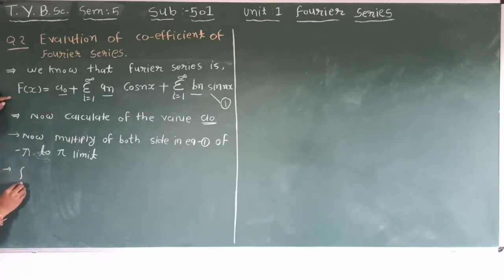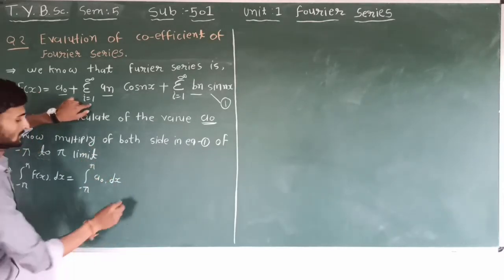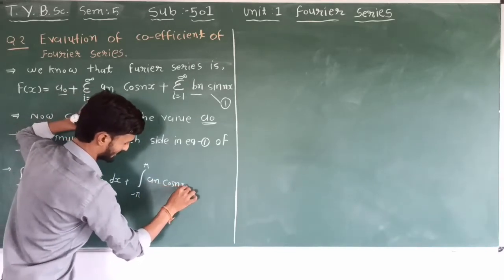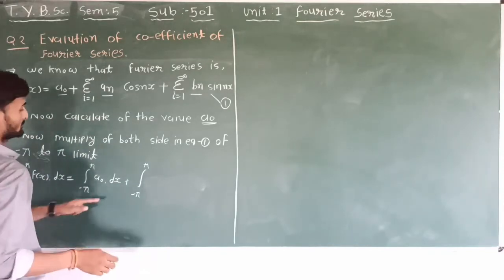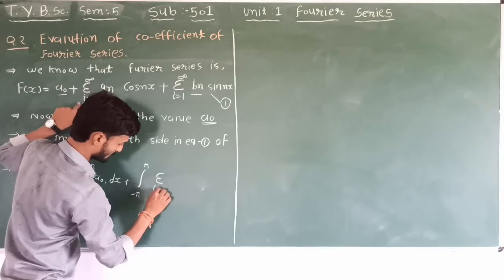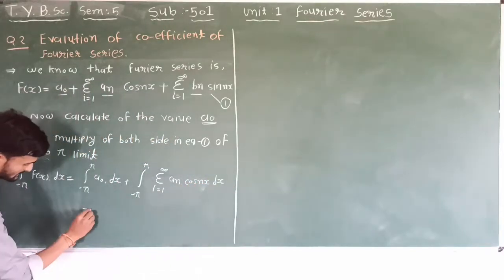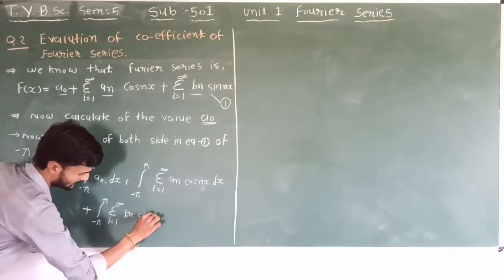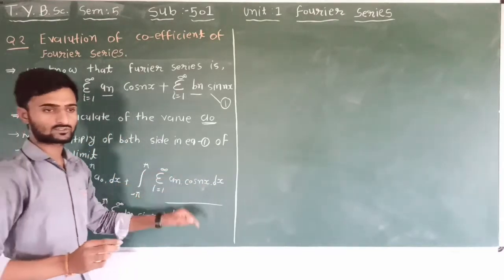The integral from minus pi to pi of F(x) dx equals the integral from minus pi to pi of A0 dx, plus the integral from minus pi to pi of the summation of AN into cos(nx) dx, plus the integral from minus pi to pi of the summation of BN sin(nx) dx.